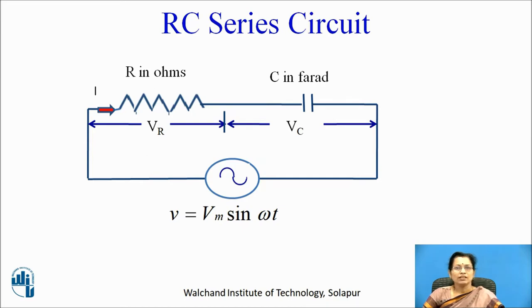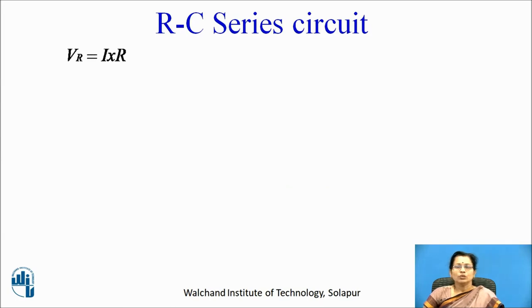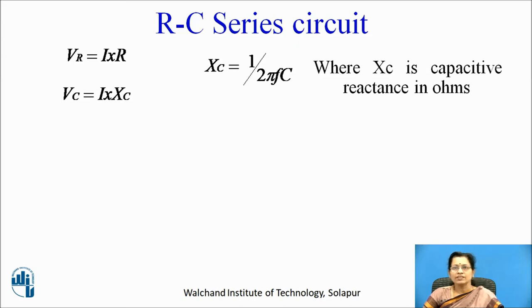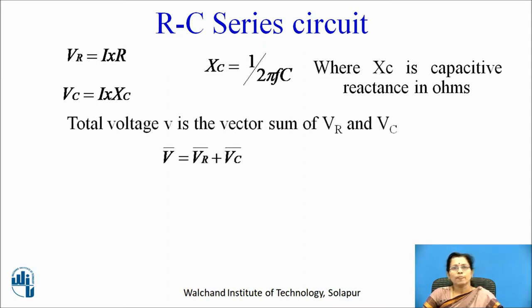Resistor and capacitor are connected in series. R is measured in terms of ohms. C is measured in terms of farad. V equal to Vm sin omega t. AC voltage is connected across series resistor and capacitor circuit. Vr is given by I into R. Vc is given as I into Xc, where Xc is the capacitive reactance in ohms, equal to Xc equal to 1 upon 2 pi f c, where f is the frequency of the supply. Total voltage V is the vector sum of Vr and Vc.